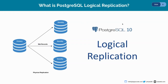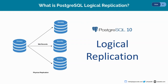So to overcome this, logical replication was introduced in PostgreSQL 10. Logical replication is a method of replicating data objects and their changes based on their replication identity, usually a primary key. We use the term logical in contrast to physical replication, which uses exact block addresses and byte-to-byte replication. PostgreSQL supports both mechanisms concurrently. Logical replication allows fine-grained control over both data replication and security.